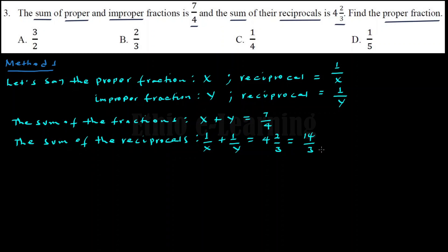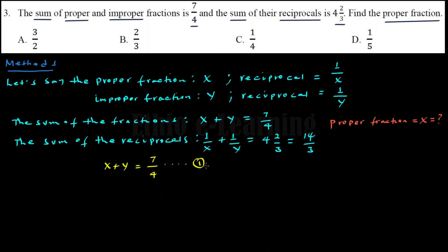We need to find the proper fraction, which means we need to find x. We have two equations and two variables. Since we want to find x, we can express y from equation one: y equals 7 over 4 minus x, and substitute into equation two.